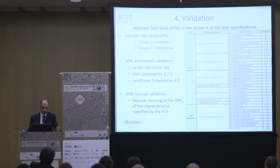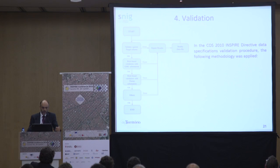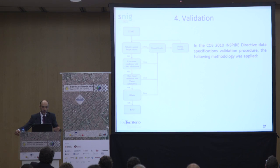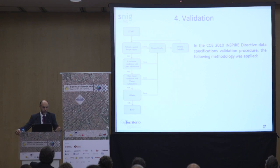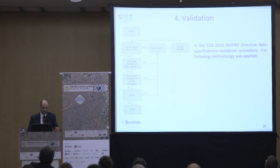The validation process is iterative. We did a validation with the application schema; if we found an error, we corrected it and returned to the beginning. Then validation with two Schematrons — the GML Schematron and the land cover Schematron — correcting errors and repeating until we had no errors.